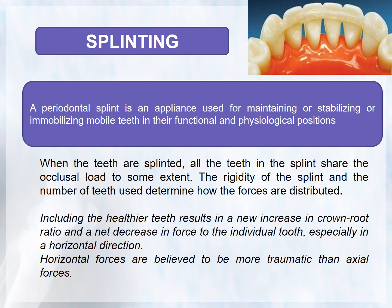A periodontal splint is an appliance used for maintaining, stabilizing, or immobilizing mobile teeth in their functional and physiological positions. It stabilizes teeth as a unit, including healthy teeth, and redirects forces from individual teeth to the unit as a whole. For a fractured tooth or bone, splinting is required for at least six to eight weeks; with no fracture, two to three weeks may suffice; in cases of avulsion, a semi-rigid splint for seven to ten days is required.